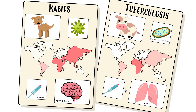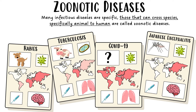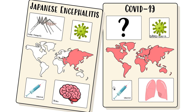That's it for zoonotic diseases. What you need to know is what zoonotic means — it's just animal-to-human spread diseases. You need to know these four examples vaguely: know what animal, know what kind of pathogen (just whether it's a virus or bacteria), you can note where it's prevalent but that's probably the least important part, and know what part of the body it affects. For all of them, the best prevention is vaccination.